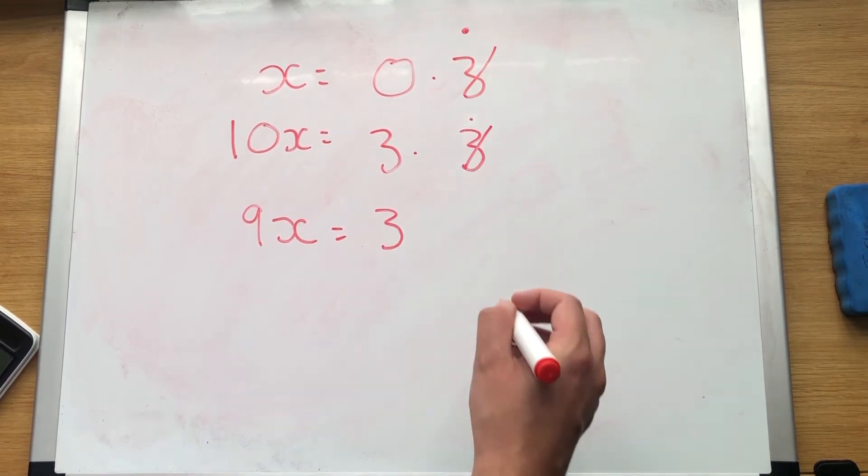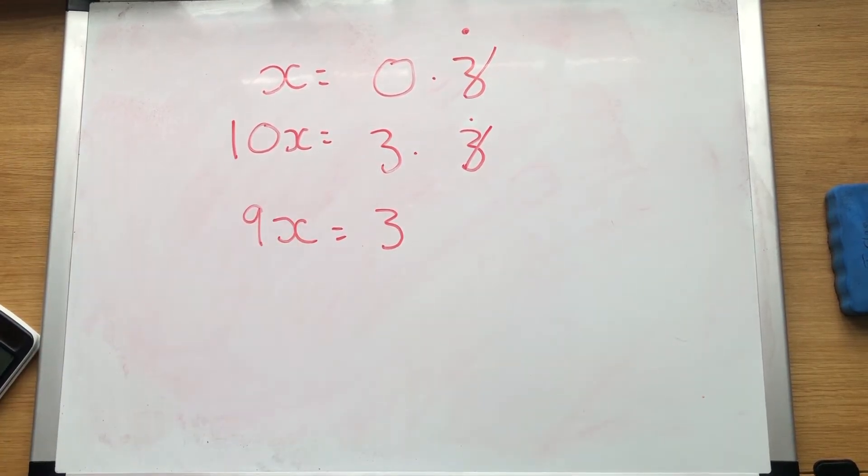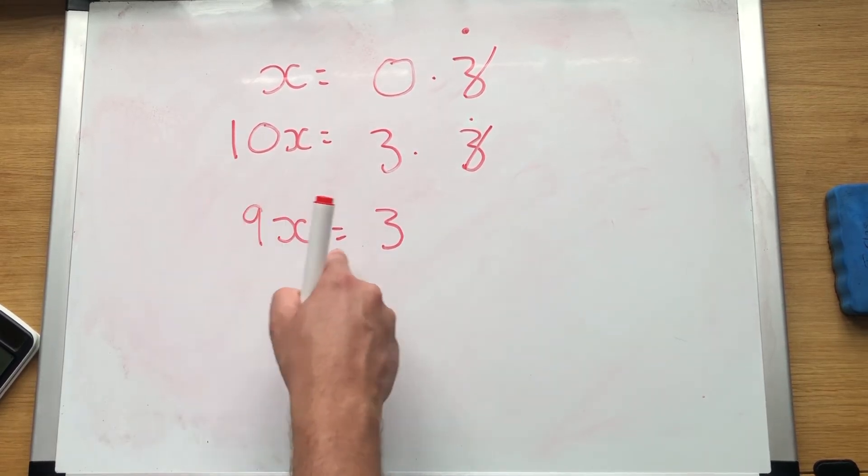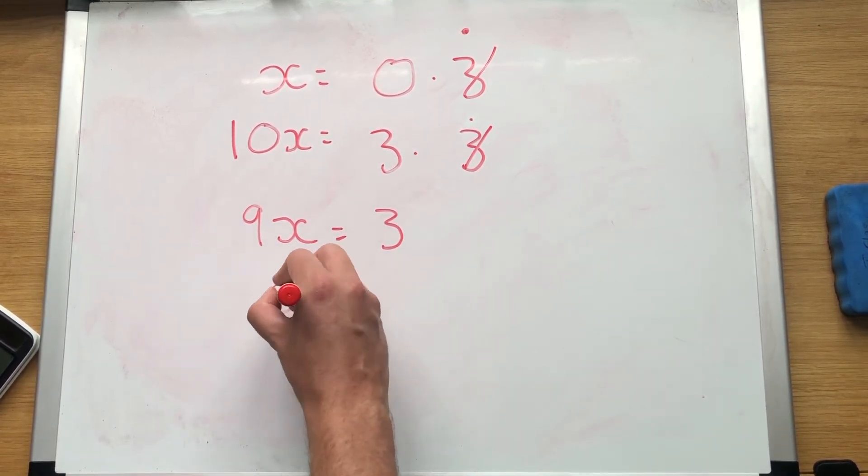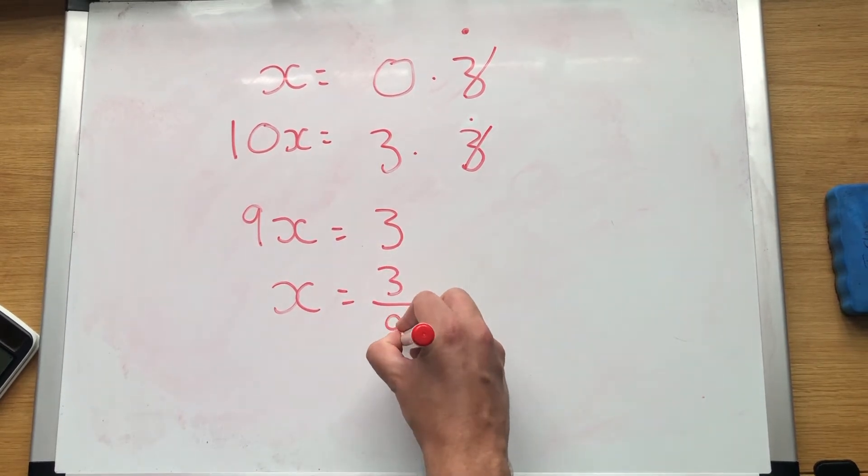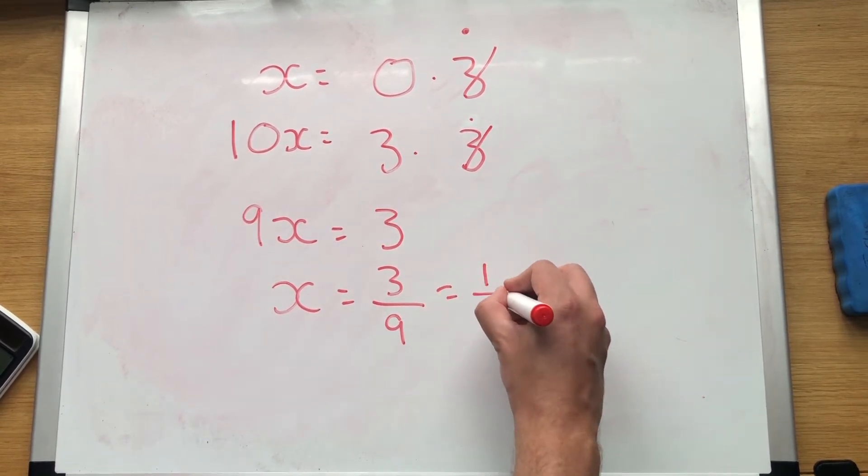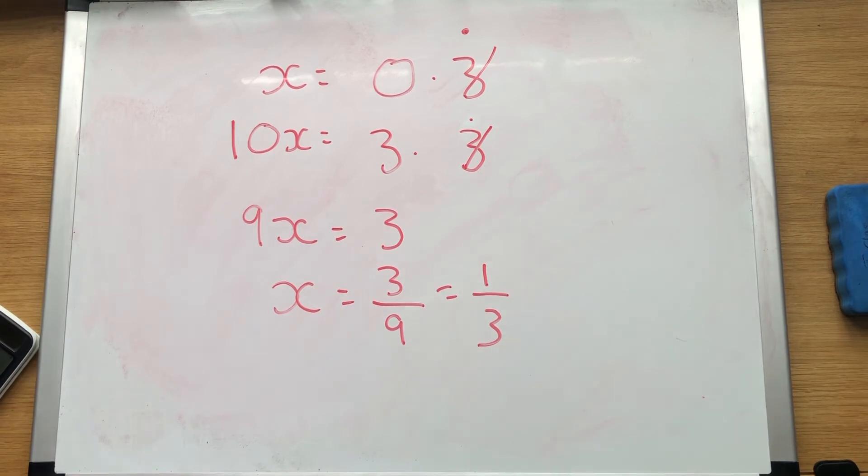0.3 recurring take away 0.3 recurring, where they both are just 3 forever, so they cancel out. Now we want to make x the subject. So divide both sides by 9. X equals 3 over 9. And we can simplify that to x equals 1 over 3. Let's do another question.